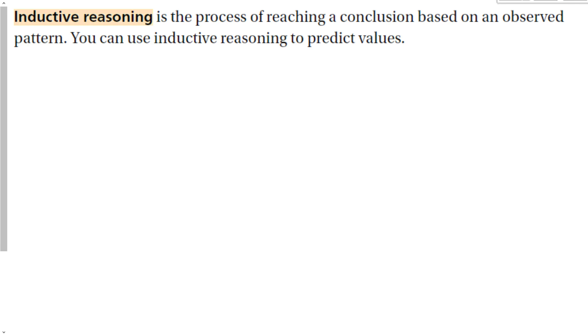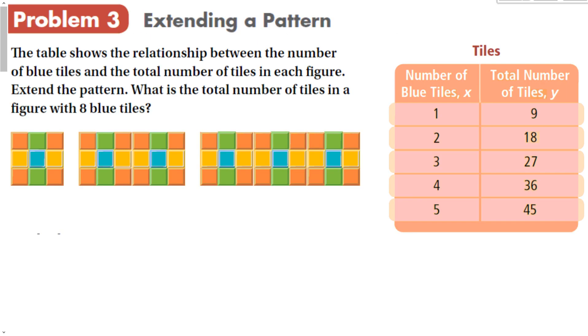The last thing we're going to talk about is inductive reasoning. This is the process of reaching a conclusion based on observed patterns. We can use this technique to predict values. For instance, the table shows the relationships between the number of blue tiles and the total number of tiles in each figure. The first figure, that one right there, has one blue tile and one, two, three, four, five, six, seven, eight, nine tiles total.